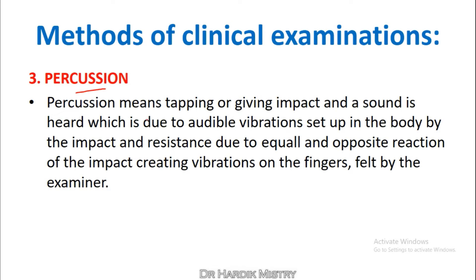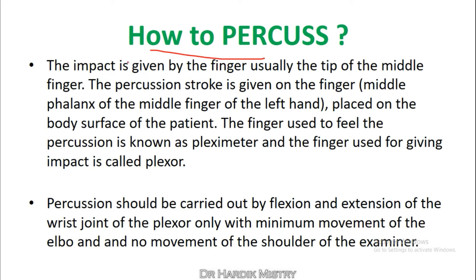Percussion means tapping or giving an impact so that a sound is heard, which is due to audible vibrations set up in the body by the impact, and resistance due to the equal and opposite reaction creates vibrations on the fingers felt by the examiner. The impact is given by the tip of the middle finger (plexor) on the middle phalanx of the middle finger of the left hand placed on the body surface (pleximeter). The finger used to feel the percussion is the pleximeter; the finger used for giving the impact is the plexor.